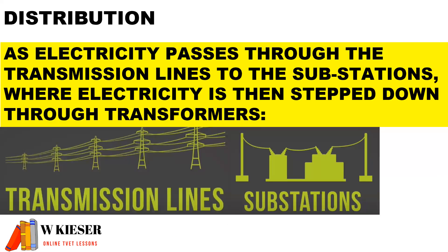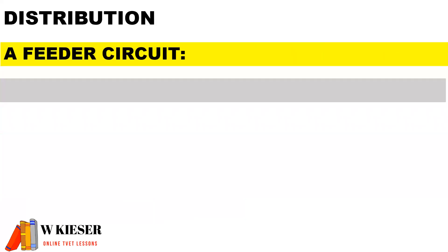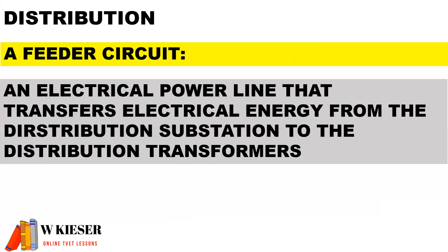For the distribution network, as electricity passes through the transmission lines to the substations, electricity is then stepped down through transformers. From these substations, electricity is distributed to consumers via different feeder circuits.